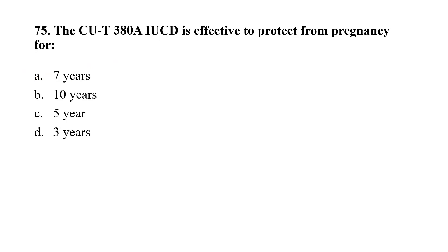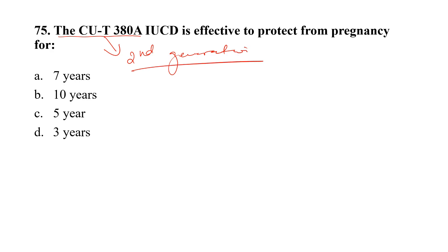Question number 75. The Copper T 380A IUCD is effective to protect from pregnancy for: Option A, 7 years; Option B, 10 years; Option C, 5 years; Option D, 3 years. Copper T 380A is the second generation IUCD and it is effective for 10 years. The correct option is B.